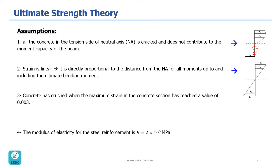The second assumption is that the strain diagram is linear, like what is shown here. So the strain is directly proportional to the distance from the neutral axis for all moments up to and including the ultimate bending moment. As you can see, strain is increasing further away from the neutral axis.